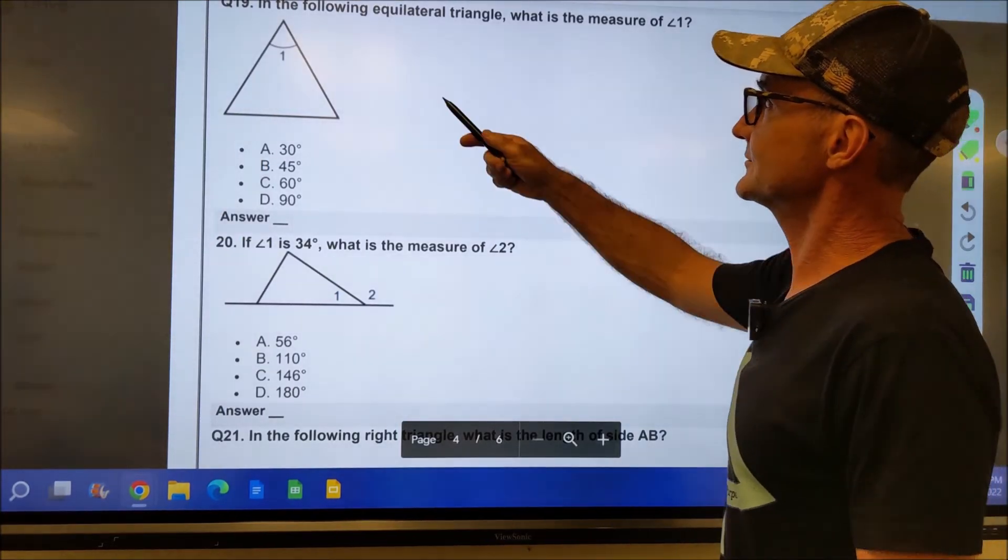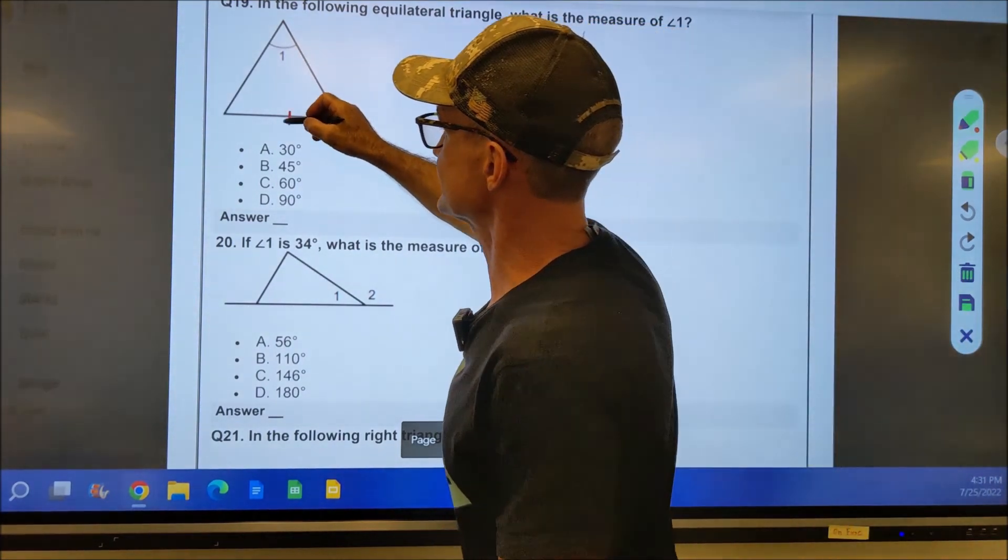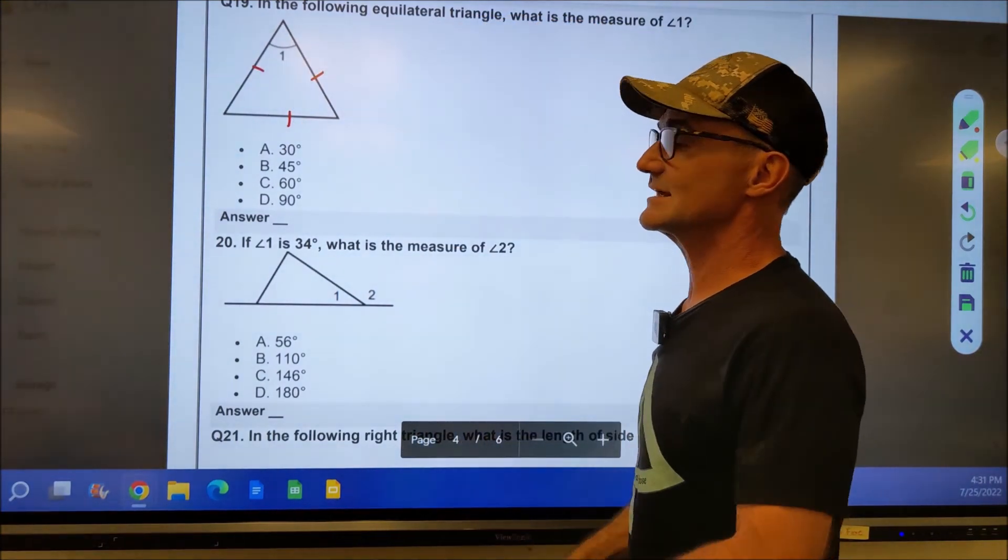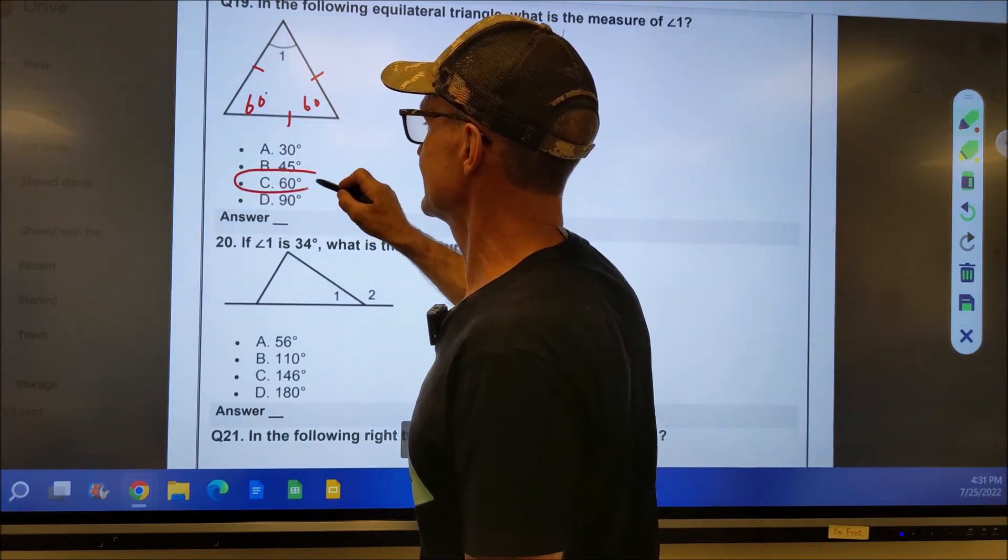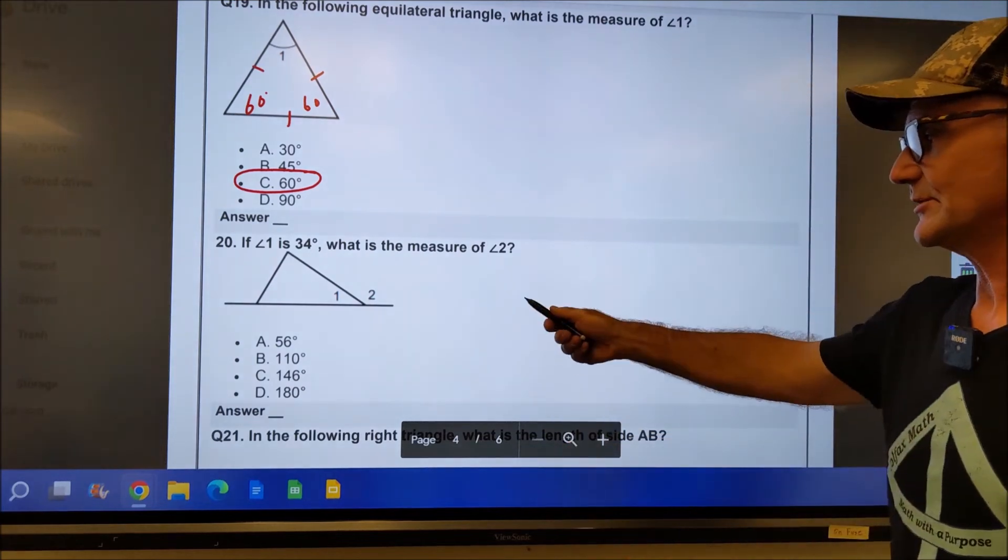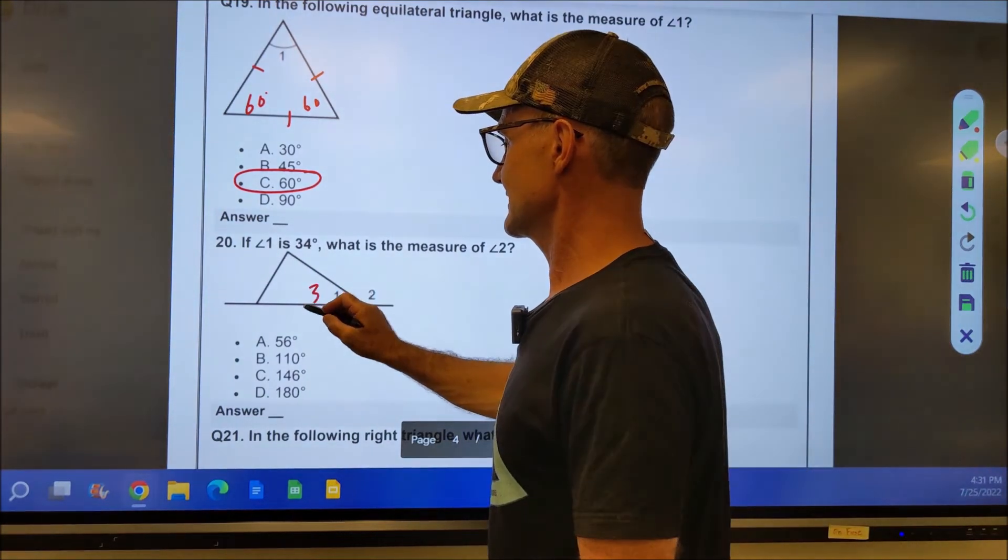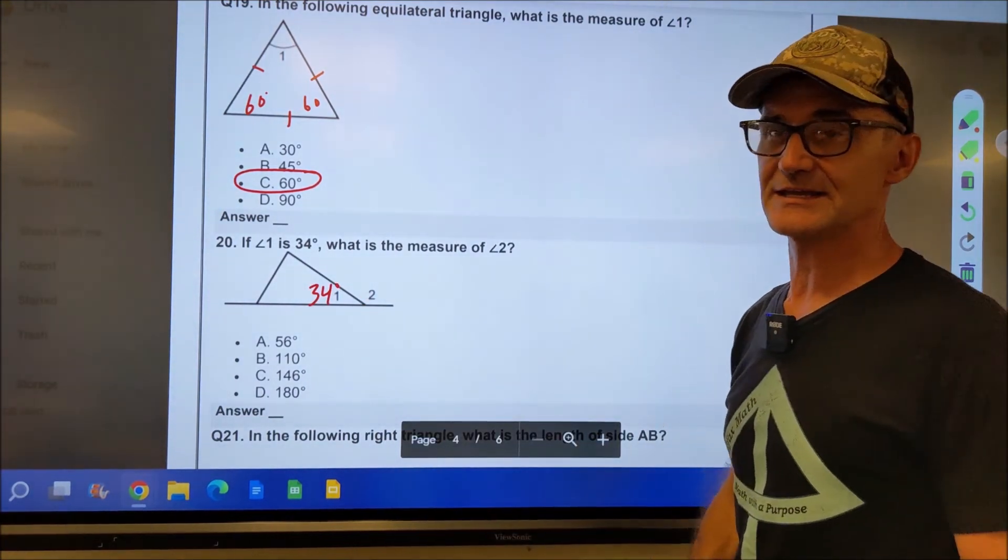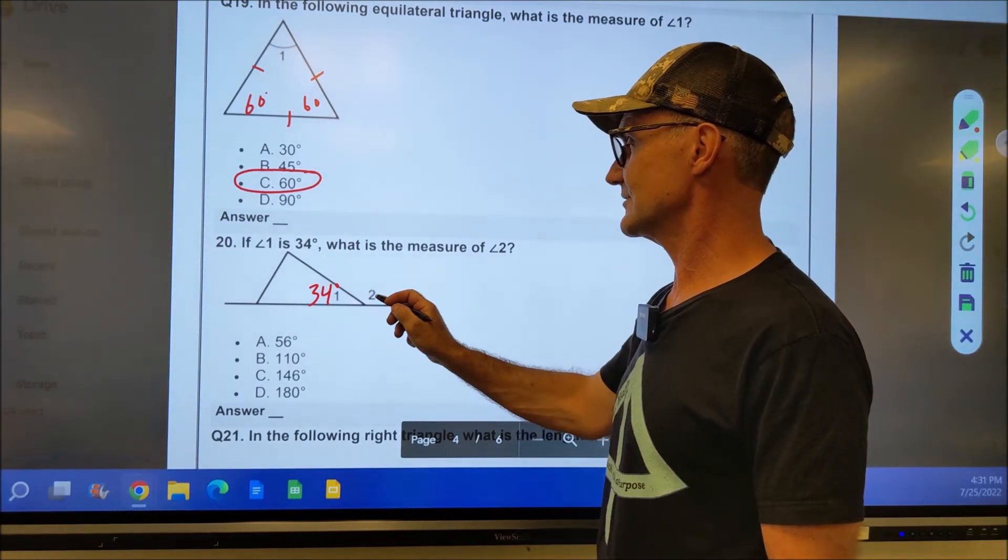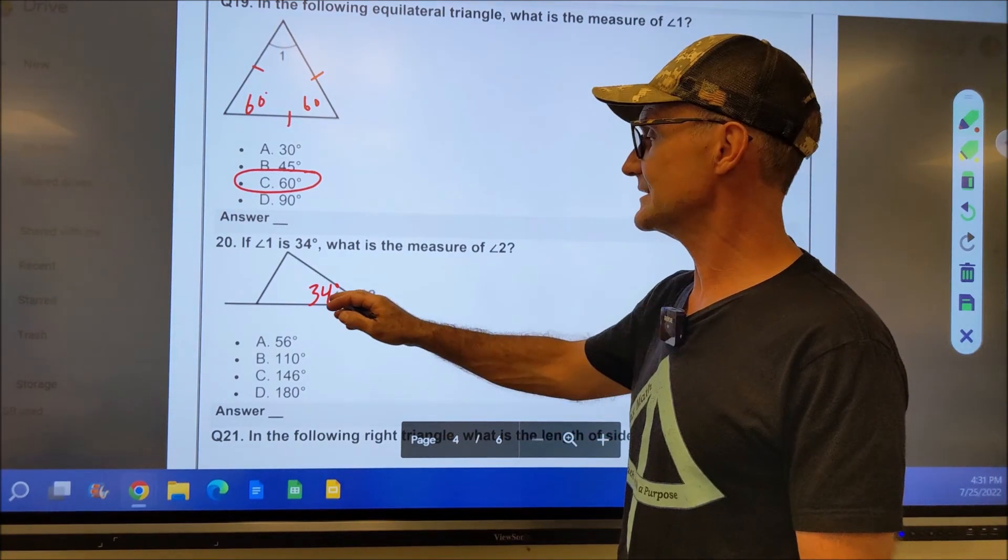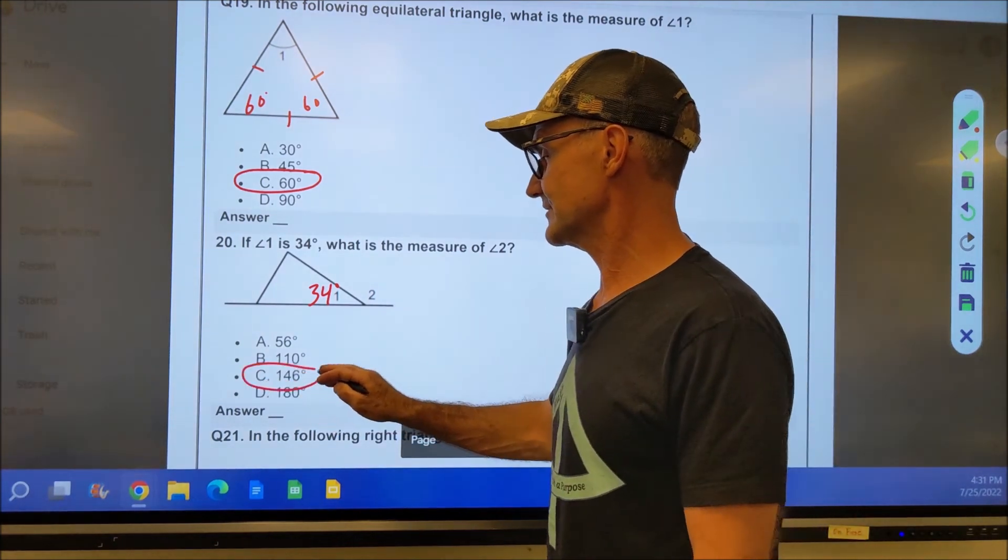Here are a couple more triangle problems. In the following equilateral triangle, what is the measure of angle one? Well, if they're all three the same length, all three angles have to be the same. They have to sum the 180. So all angles are 60. So angle one is 60 degrees. Go ahead, pause the video, do this problem, and then I'll do it. If angle one is 34 degrees, if you're taking a paper test, I mark it up as much as I can. What is the measure of angle two? All of this is a distractor. You just need to know this is its linear pair. 180 minus 34 is 146. There's the answer right there.